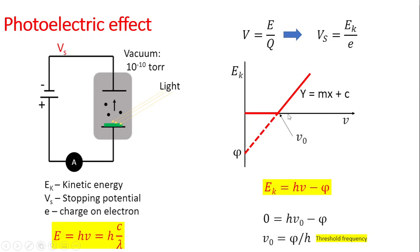Using the equation y = mx + c, where the y-intercept is the work function φ, we get the photoelectric equation: Ek = hν - φ. When you set kinetic energy to zero, the threshold frequency is ν₀ = φ/h, where h is Planck's constant.